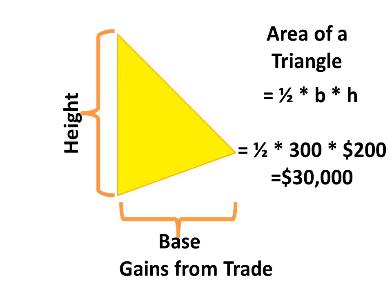And when we have this area, we get, using the formula for a triangle, one-half base times height, so one-half times 300 times 200, so $30,000 worth of gains from trade.